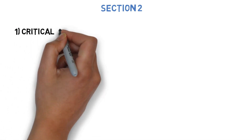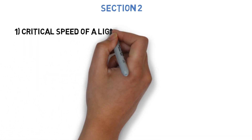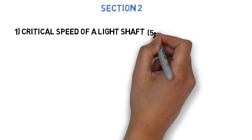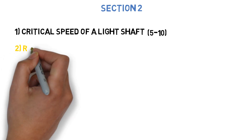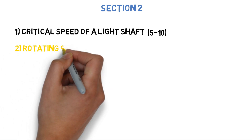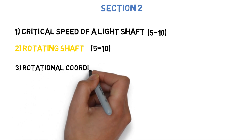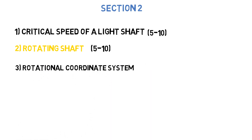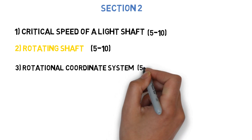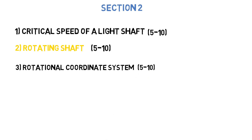In section 2, the first question is: derive the equation for critical speed of a light shaft with a single disc without damping. This can come for 5 to 10 marks. Next: explain the term critical speed of rotating shaft — 5 to 10 marks. Next: how to convert multi-dampers into a single spring and damper with linear or rotational coordinate system. This can come for 5 to 10 marks.